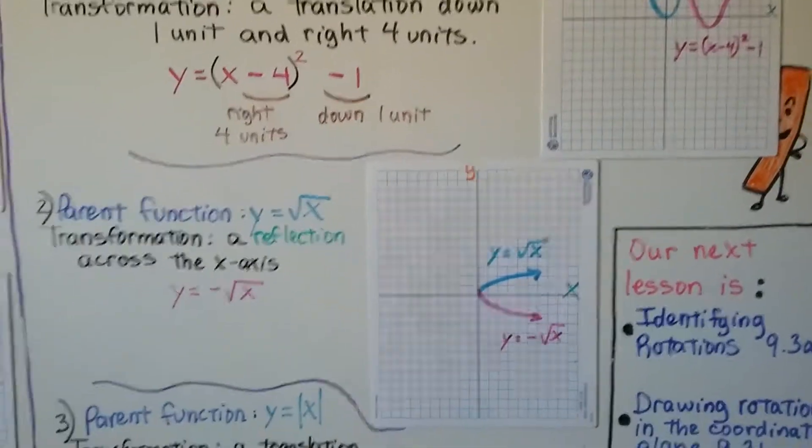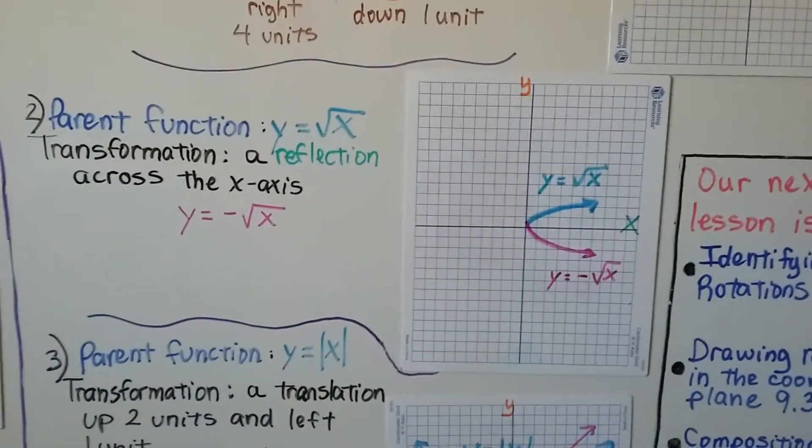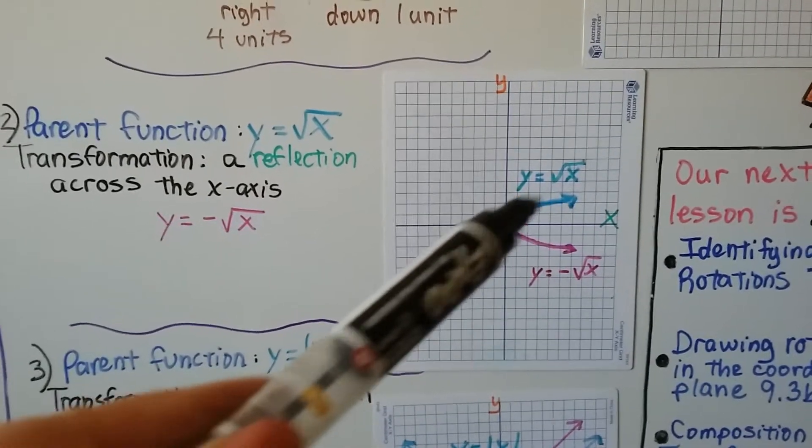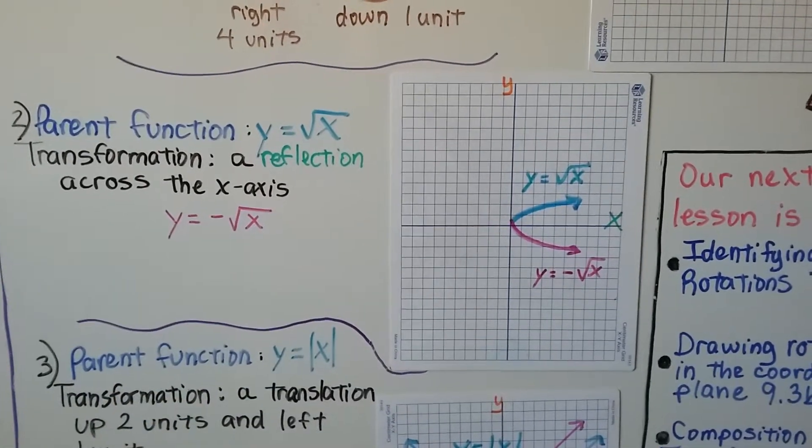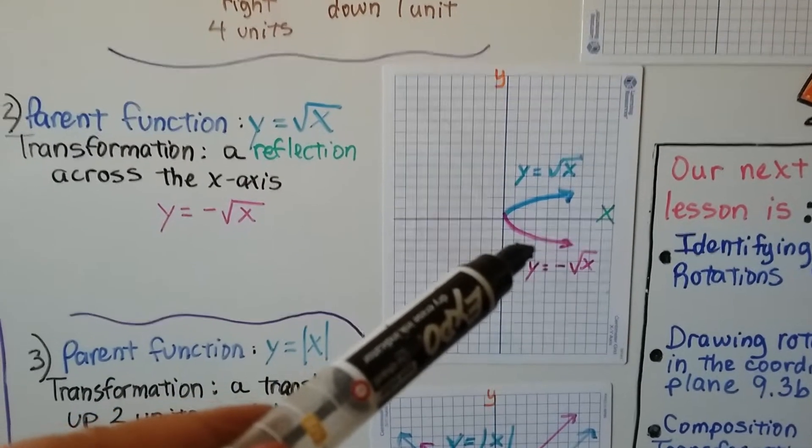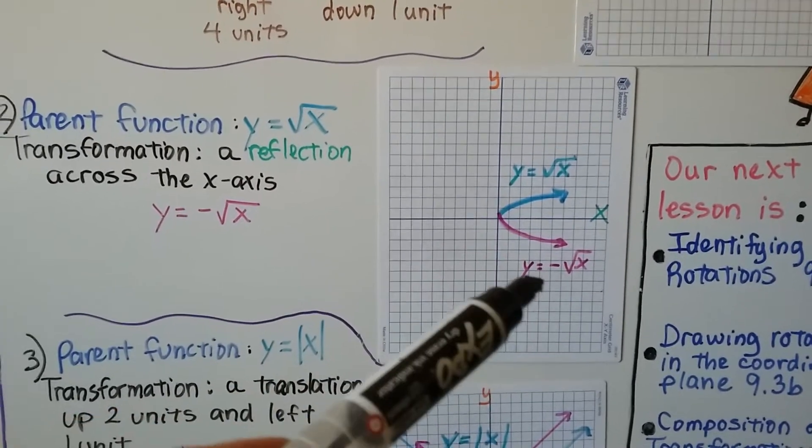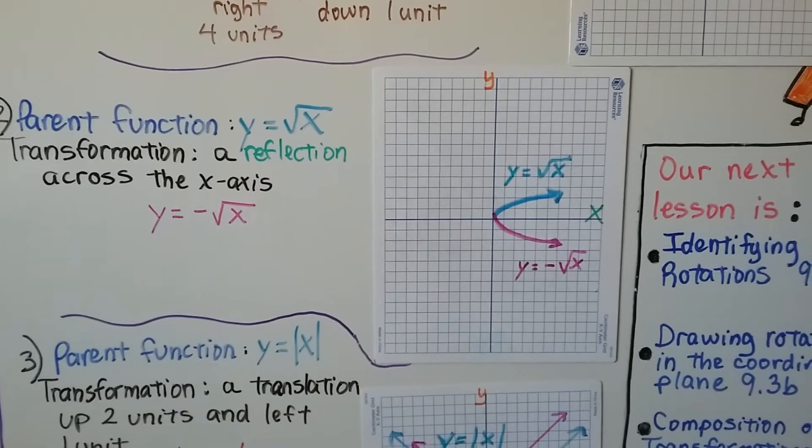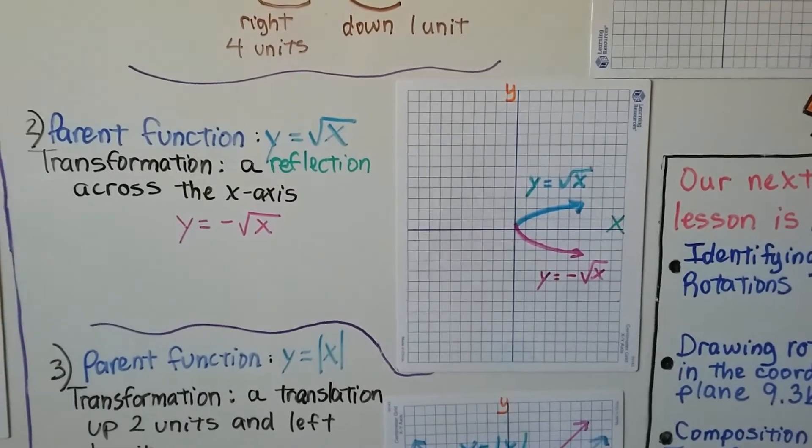For a parent function y equals the square root of x, that would be the blue part here. Our transformation, a reflection across the x-axis, would be y equals negative x squared. See? It's just reflecting across the x-axis.